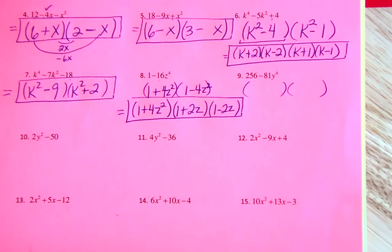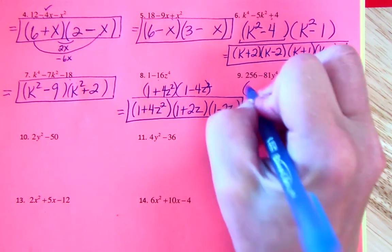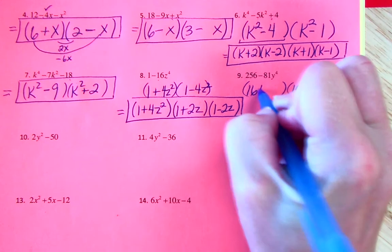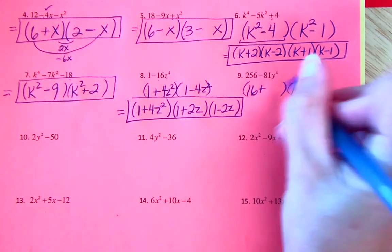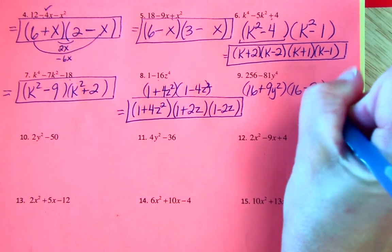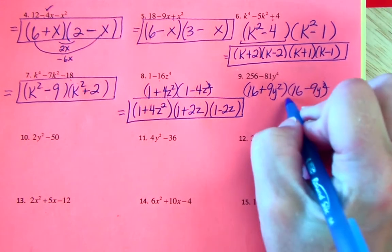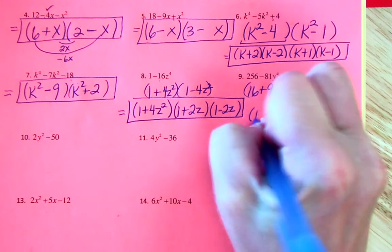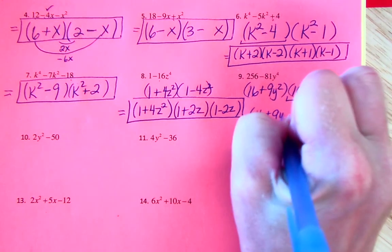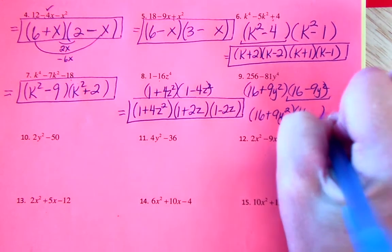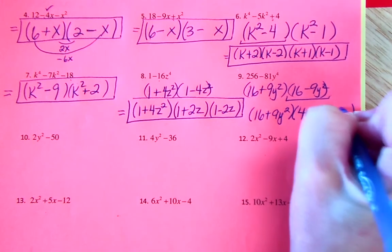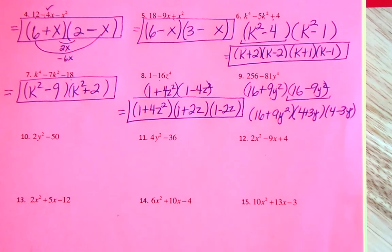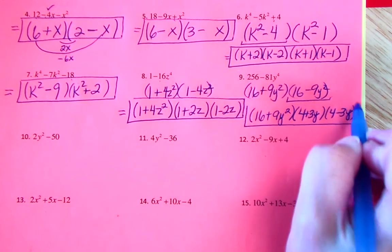256 is 16 squared, correct. So 16 times 16, plus and minus. To get 81y⁴ that would be 9y² times 9y². This is also DOTS, so copy down that first factor, then it's 4 and 4: (4 + 3y)(4 − 3y). Those two factors have to be conjugates.